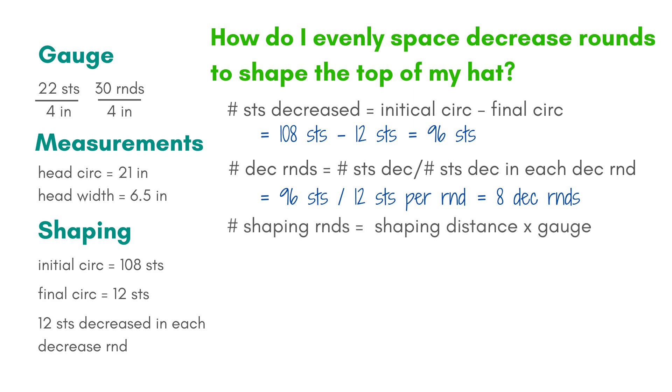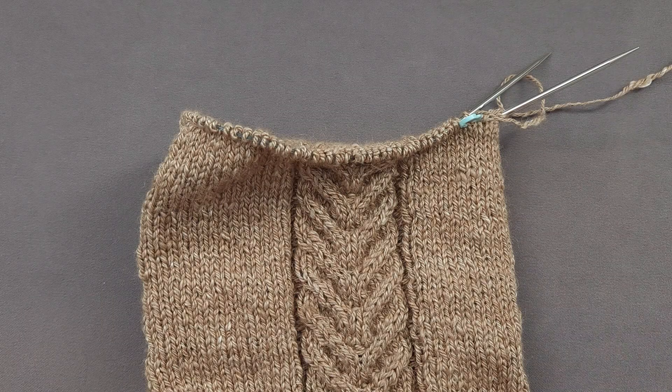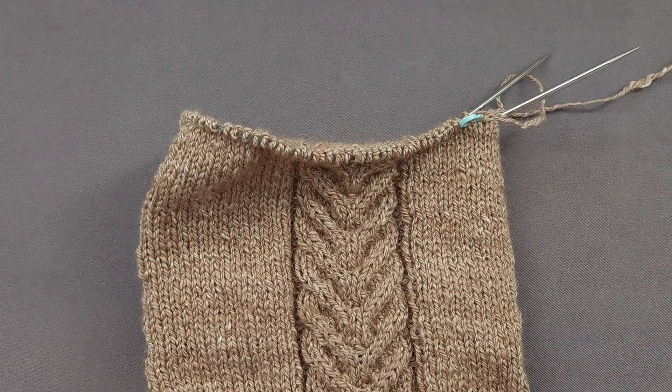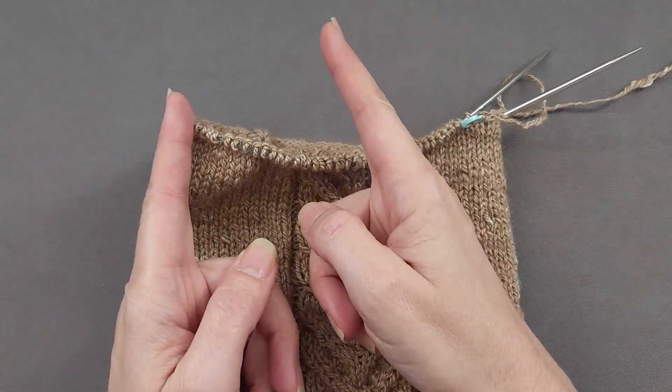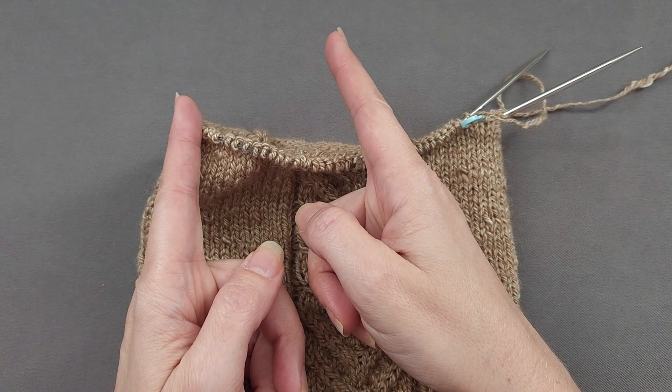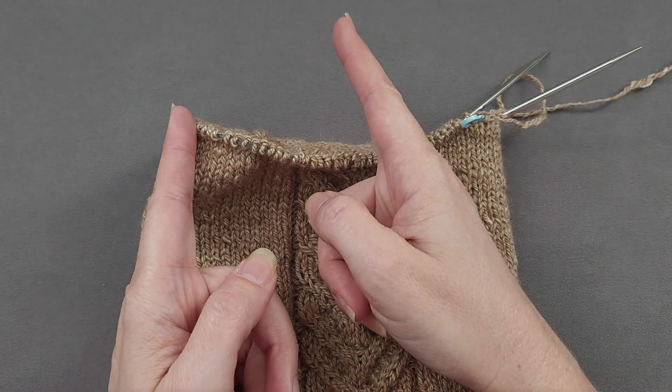Before I can figure out how to space the decrease rounds, I need to know how many total shaping rounds there will be. Since the width across my head is about 6.5 inches, I think I'm going to shape my hat over a little less than half that distance, or about 3 inches.